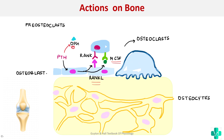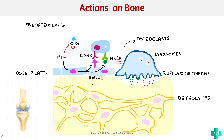The activated osteoclasts have many lysosomes as well as a ruffled membrane, and at that membrane they have acid-secreting channels. Through these channels they produce substances that cause resorption of bone, resulting in increased bone resorption and more calcium being mobilized from the bones, raising serum calcium levels.